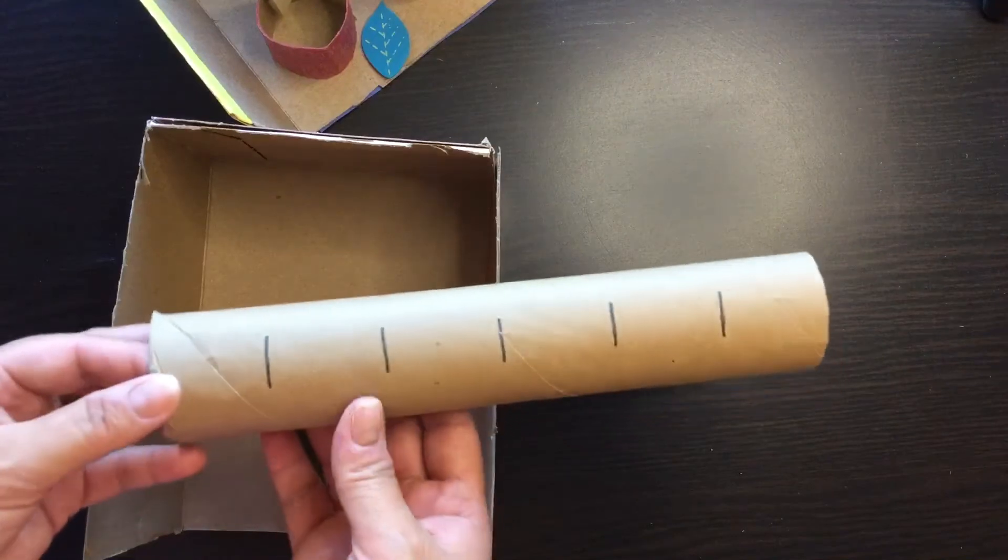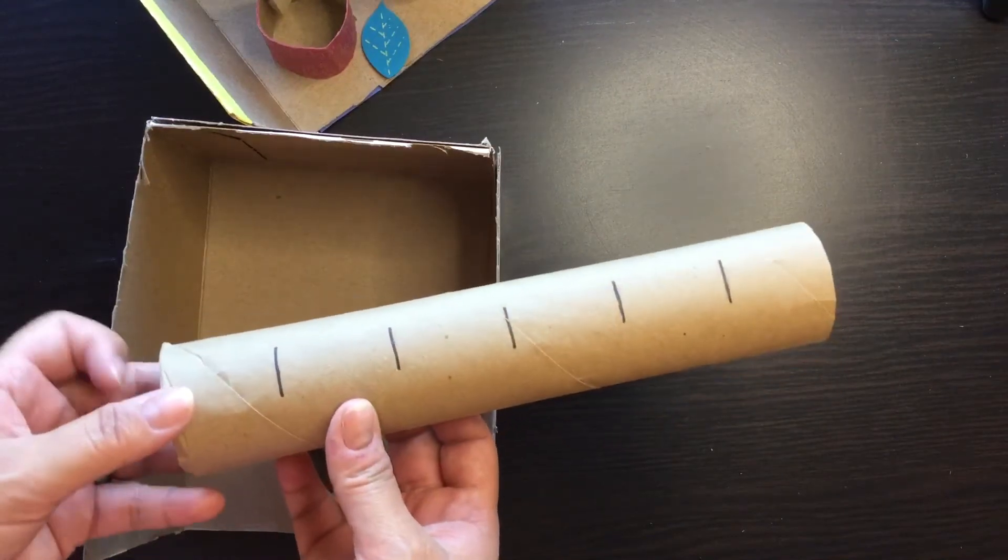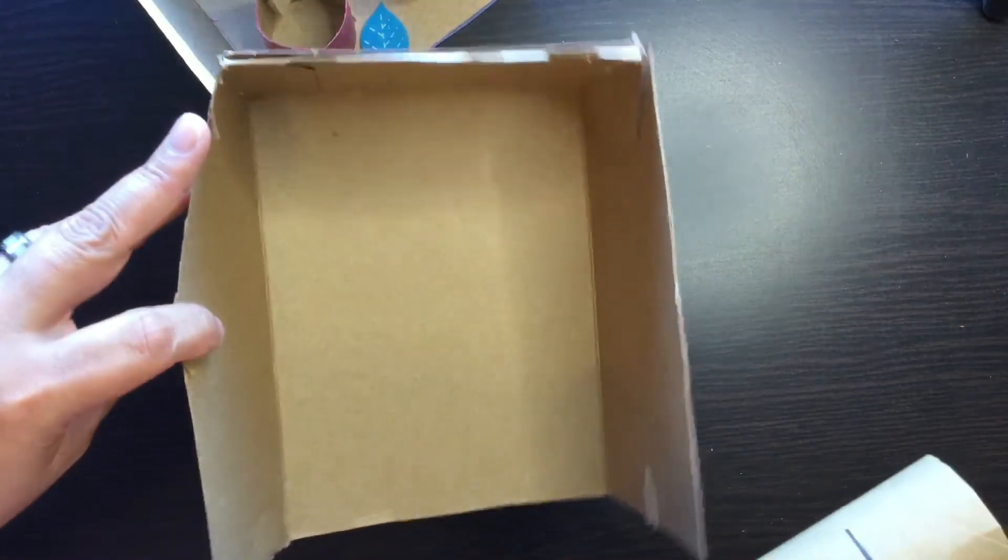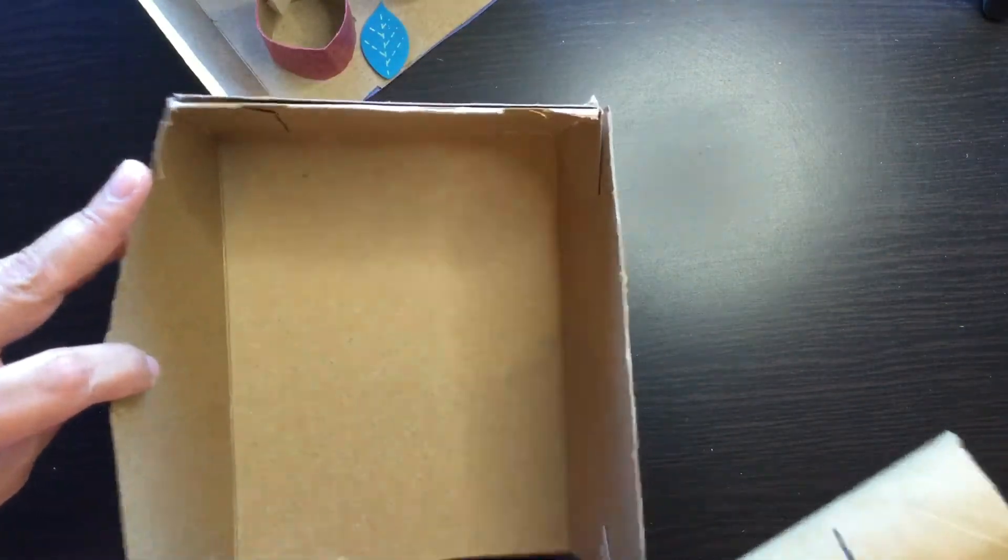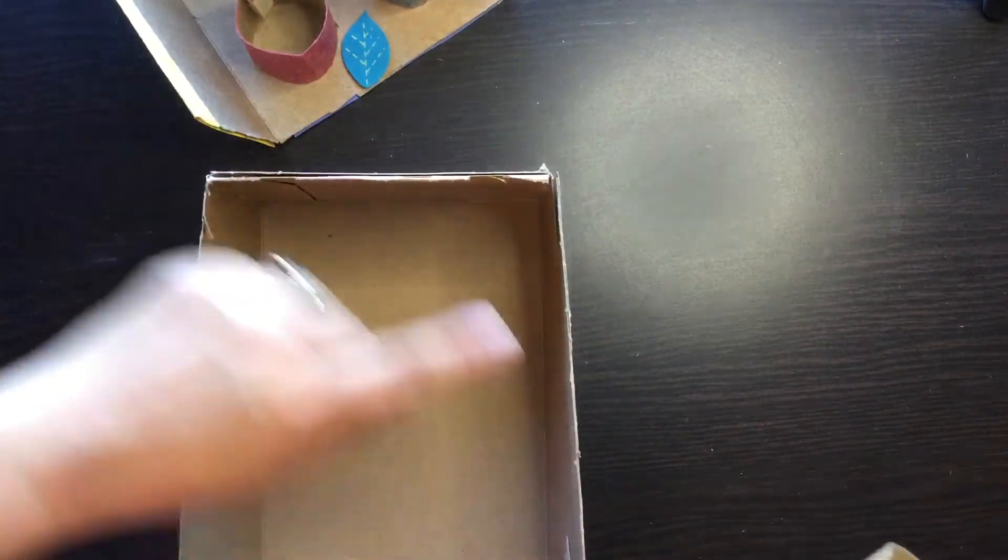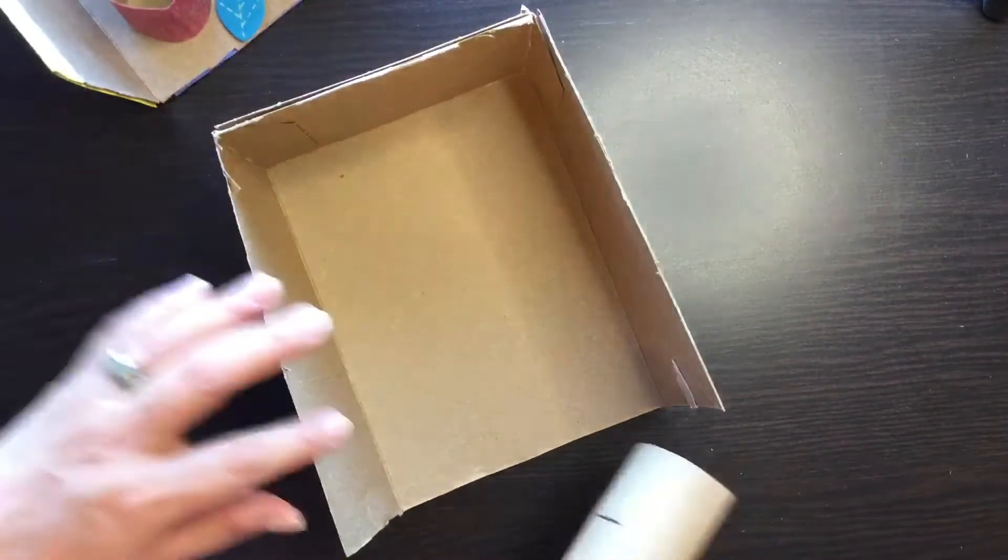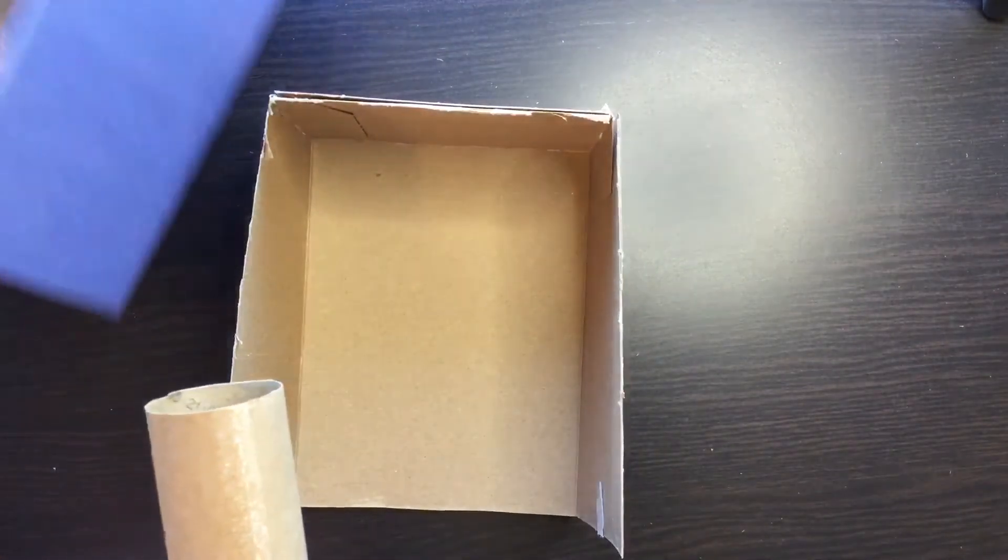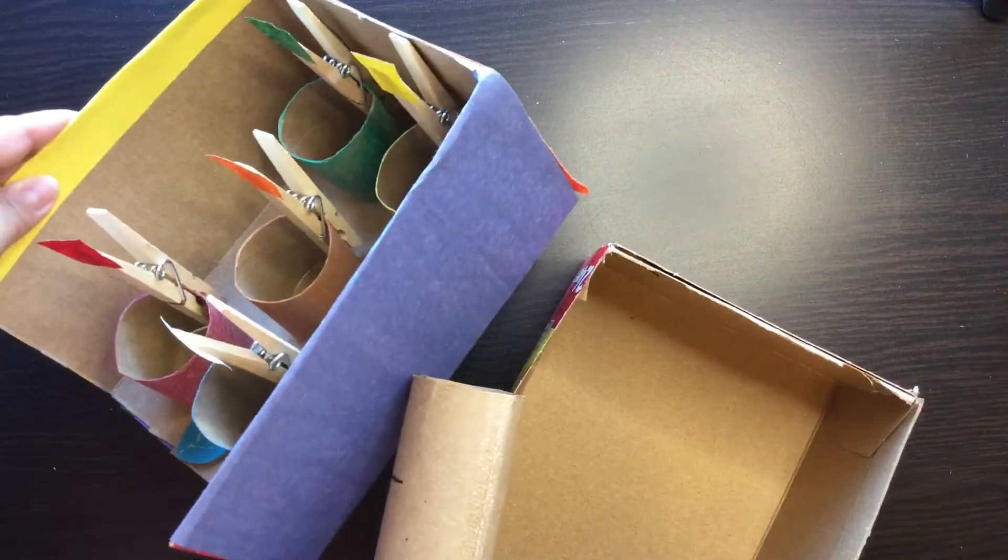One of the things you need is one of those discarded paper towel rolls, empty ones, and an empty box like a Kleenex box, a tissue box, or this coffee filter box. I cut up the top and then I cut the front of the box like so, and then you can decorate it with construction paper, scrap paper, whatever you have around.